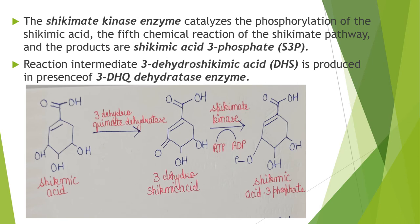The shikimate kinase enzyme catalyzes the phosphorylation of shikimic acid — the fifth chemical reaction of the shikimate pathway — and the product is shikimate-3-phosphate. The reaction intermediate 3-dehydroquinic acid is produced in the presence of 3-DHQ dehydratase enzyme.